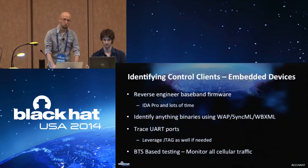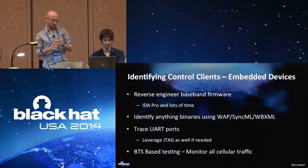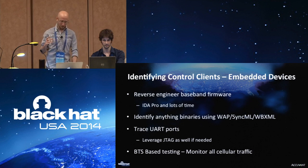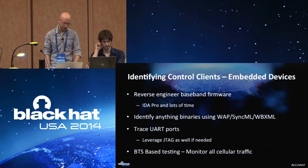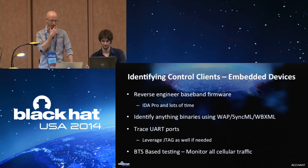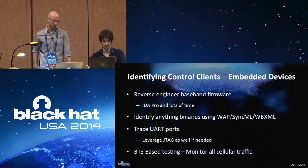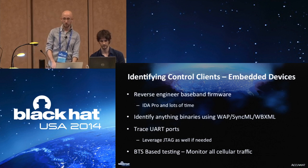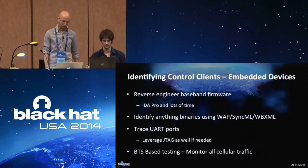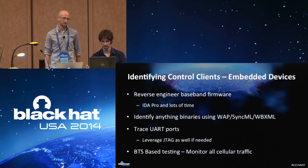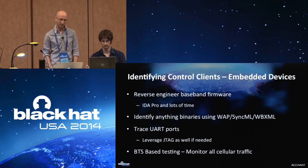For embedded devices, usually just start reverse engineering the baseband firmware itself — throw it in IDA. Anything containing WAP, SyncML, or WBXML strings and you usually find it pretty quickly. If you can't get easy access to firmware, recommend tracing any UART communications, stick it onto whatever network it's supposed to be on, and watch all traffic going across UART. You can leverage JTAG if needed. A lot of these devices — if you put them on your BTS configured the right way — they'll start communicating just like their home network.